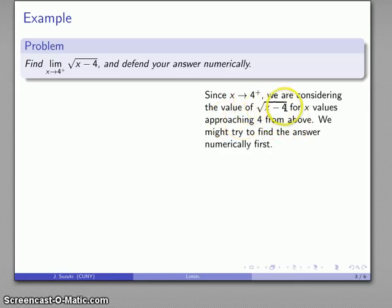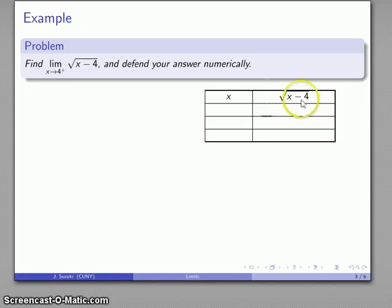If you look at the function, you'll see why we can't approach 4 from below: if x is less than 4, we're taking the square root of a negative number, which for real variable calculus is undefined. To defend our answer numerically, we'll consider values of x that are close to 4, always staying a little bit more than 4, and find the corresponding value of sqrt(x − 4).